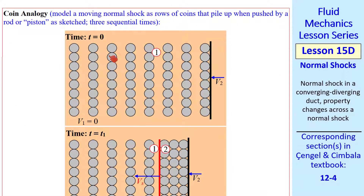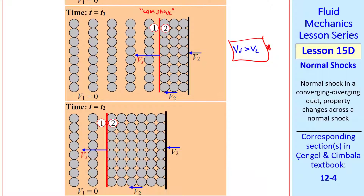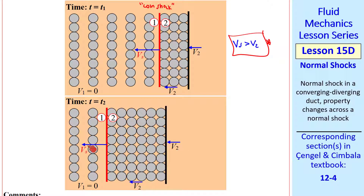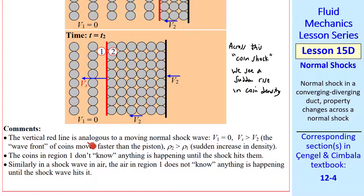Another analogy is the coin analogy. Imagine rows of coins which we start pushing at time 0 by a piston at speed V2. At some later time, the piston has moved and the coins have started bunching up — we can think of this as a coin shock, with one upstream of the shock and two downstream. This shock moves at speed Vs, which is larger than V2. The coins in region 1 don't know anything is happening until the shock hits them. Similarly, in a shock wave in air, the air in region 1 doesn't know anything is happening until the shock wave hits it. The same thing holds true for the cars driving in the fog.